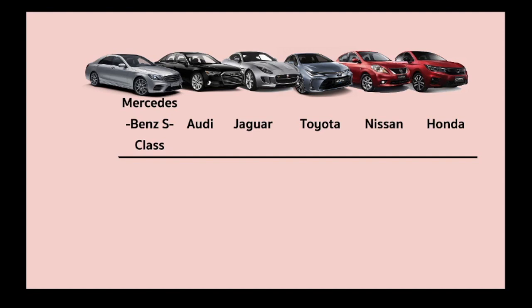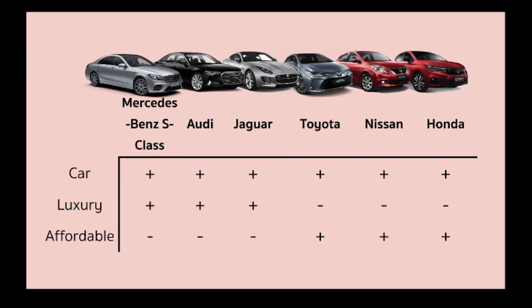The last example: Mercedes-Benz S-Class, Audi, Charco, Toyota, Nissan, and Honda. The shared semantic feature of these words is 'car,' so we mark plus for all. But they also have different semantic features: Mercedes-Benz S-Class, Audi, and Charco contain the semantic feature of 'luxury car,' whereas Toyota, Nissan, and Honda contain the semantic feature of 'affordable car.' So that's all for this chapter.